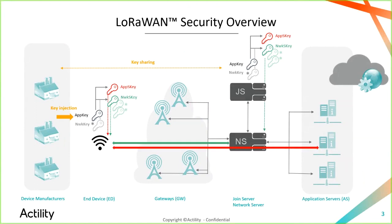The second step is key sharing. Once the key has been injected into the device, it also needs to be shared with the network, because we are running symmetric cryptography algorithms, so keys must be pre-shared between device and cloud for end-to-end security. Most of the time, key sharing is done via key management platforms or directly to the join server itself, and different cloud-side players may receive and need to store and use them securely.